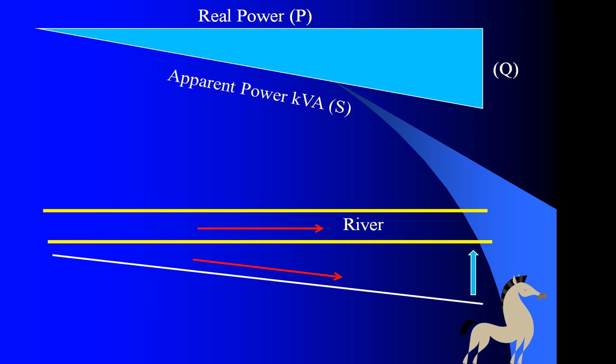If we examine our two systems together, we can see that by reducing the angle for the horse on the river, we reduce the work that he has to do. And by reducing the phase angle in our electrical system, we can reduce the apparent power to be close in magnitude to the real power. This means keeping the phase angle small and the power factor as close to one as possible.